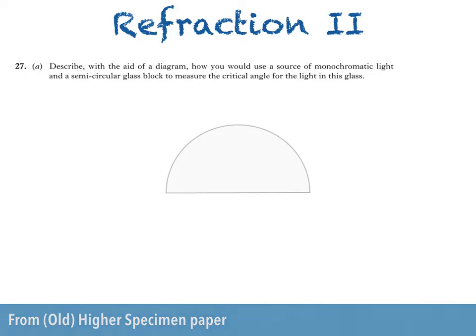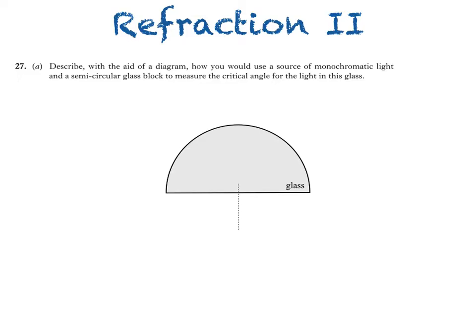So here's the semicircular glass block. The dotted line at 90 degrees to the surface is of course the normal. What you would do then is direct the light into the glass block like this. You then increase the angle of incidence in glass until the angle of refraction is equal to 90 degrees. At this point the ray of light is partially reflected and partially refracted with the refracted ray straight along the air glass boundary.